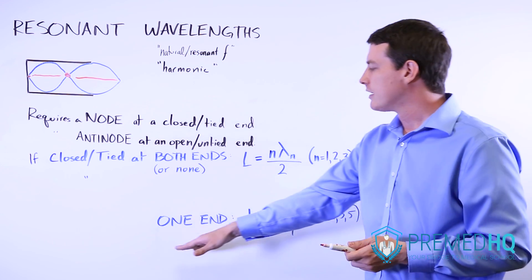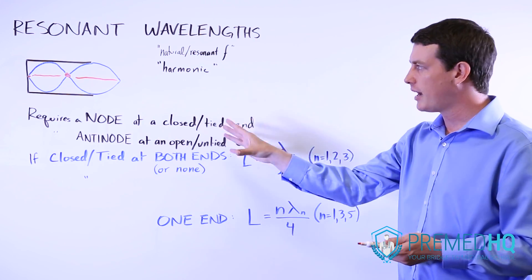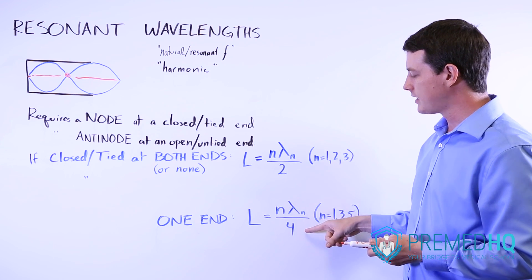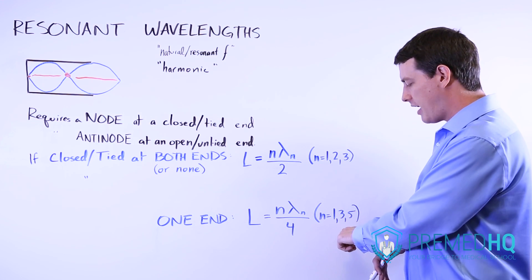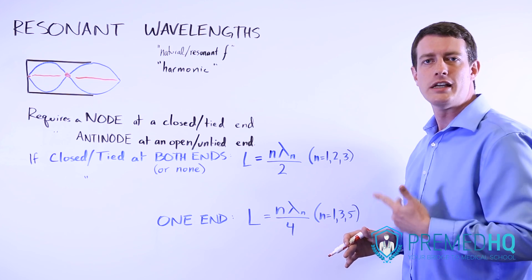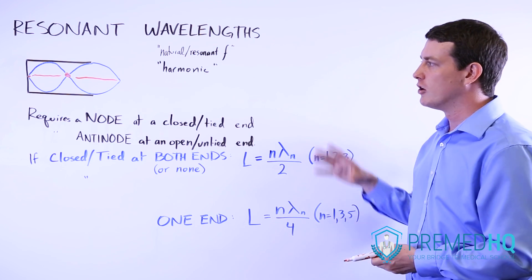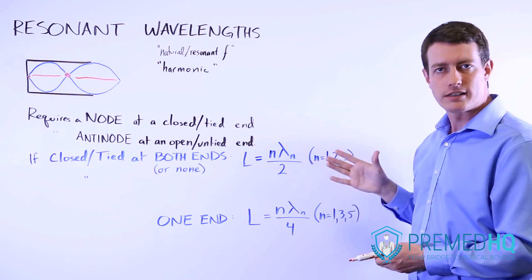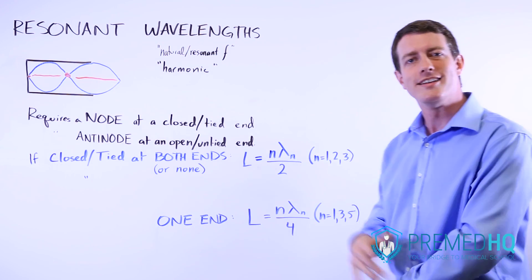Now if it's closed or tied at one end, then you use a different formula. The length of the pipe or chamber equals n times lambda sub n divided by 4. But in this one, you skip every even numbered integer. So it's only odd numbered integers, 1, 3, 5, and 7, that can be used to calculate your harmonic or resonant wavelengths. In this example, where it is tied or closed at only one end.